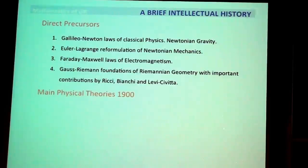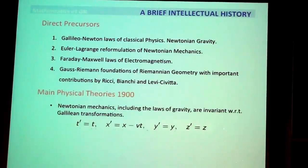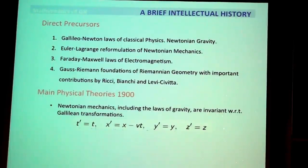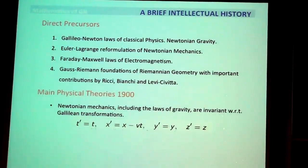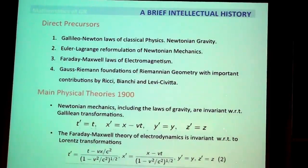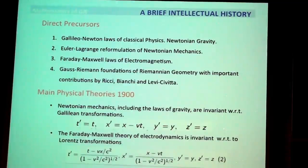At the beginning of the 20th century, there were two fundamental theories. One was Newtonian mechanics, in which you had the Galilean transformations — Newtonian mechanics is invariant relative to Galilean transformations. The other was Faraday-Maxwell electrodynamics, which is invariant by the Lorentz transformation. They are very different in that sense — one is Galilean, one is Lorentzian. This was a major issue after Maxwell wrote down his equations.